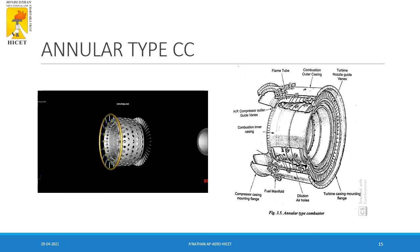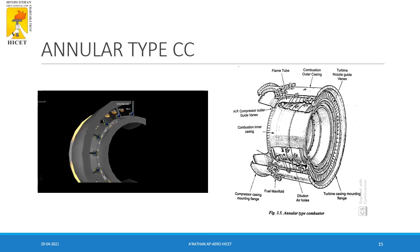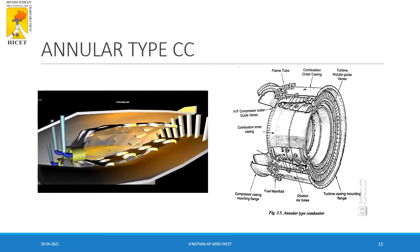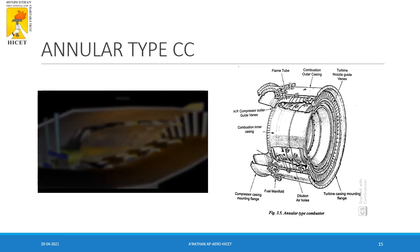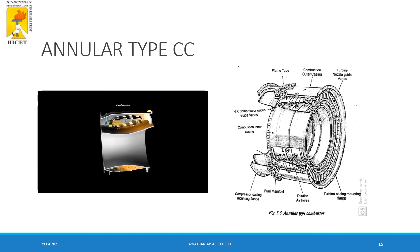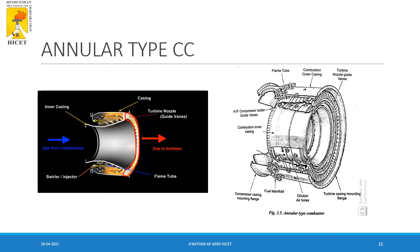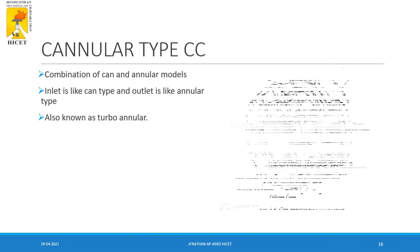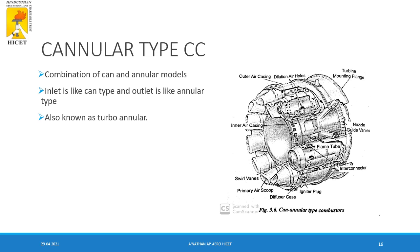An animation demonstrates how the annular type combustion chamber works. The next type is the cannular, or tubo-annular, type — a combination of can type and annular type, where the inlet is arranged like a can and the exit is similar to an annular type. It has an intermediate weight between the can type and annular type.